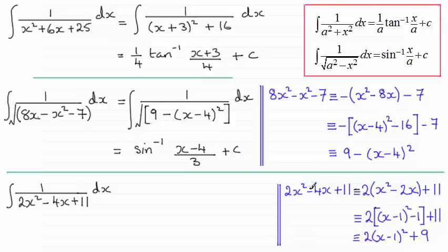Completing the square you should have something like this. I've pulled out 2 over the first two terms leaving me with x² - 2x here. Complete the square on x² - 2x gives me (x-1)² - 1 in here, and then expanding the bracket we end up with 2(x-1)² + 9.